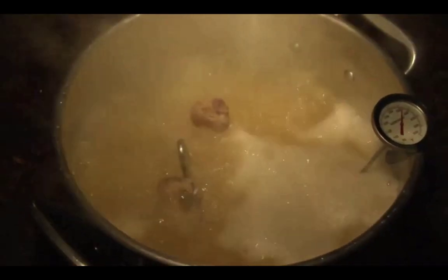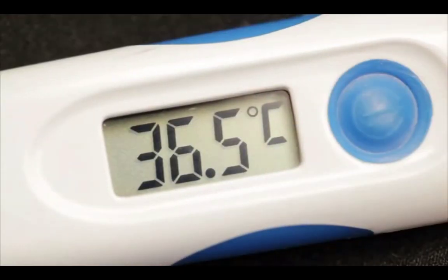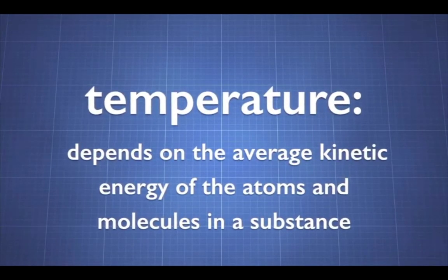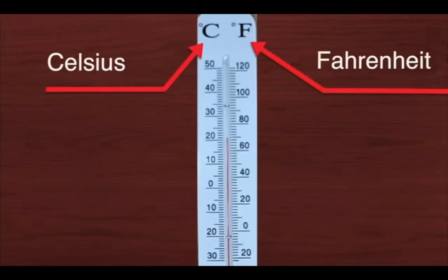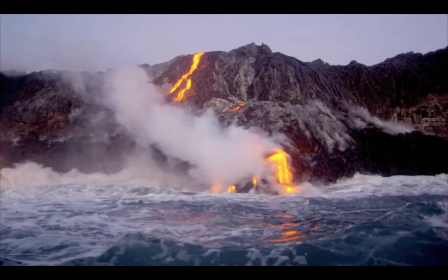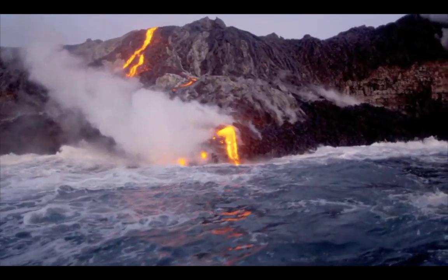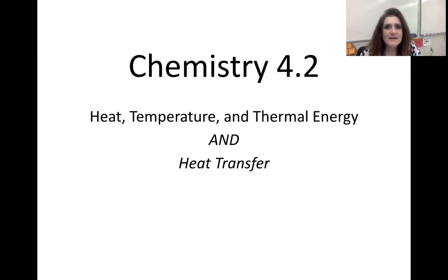Temperature depends on the average kinetic energy of the atoms and molecules in a substance — it indicates how hot or cold a substance is. Temperature is measured with a thermometer in degrees Celsius, Fahrenheit, or Kelvin. As the temperature increases, the velocity of the atoms increases. Therefore, the hotter the substance, the greater the average kinetic energy — and hotter substances have more thermal energy. As thermal energy is transferred as heat from one object to another, it is possible to determine the amount of energy transferred. Thanks for watching Physical Science 4.2 on heat, temperature, and thermal energy — this has been part one.